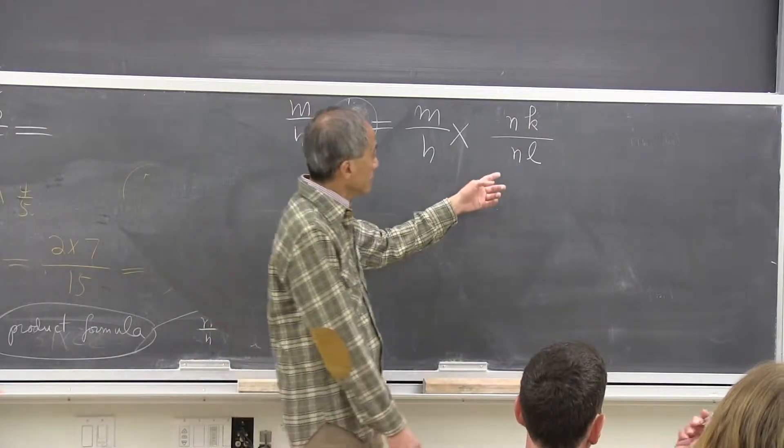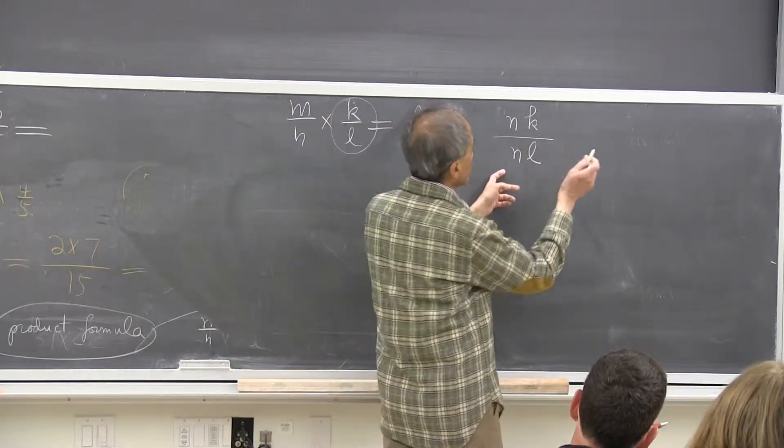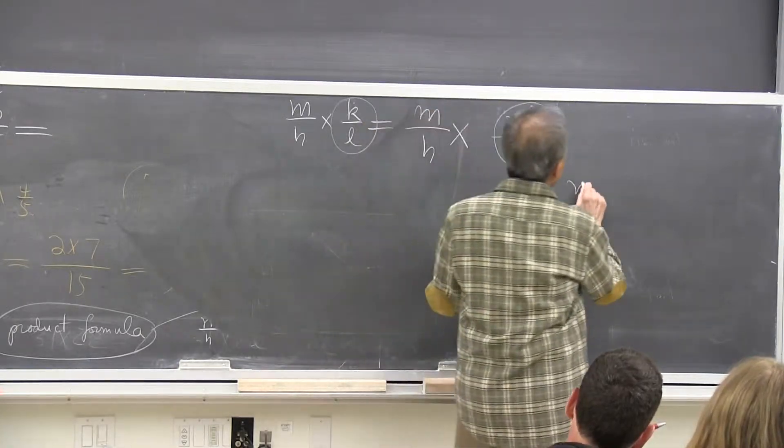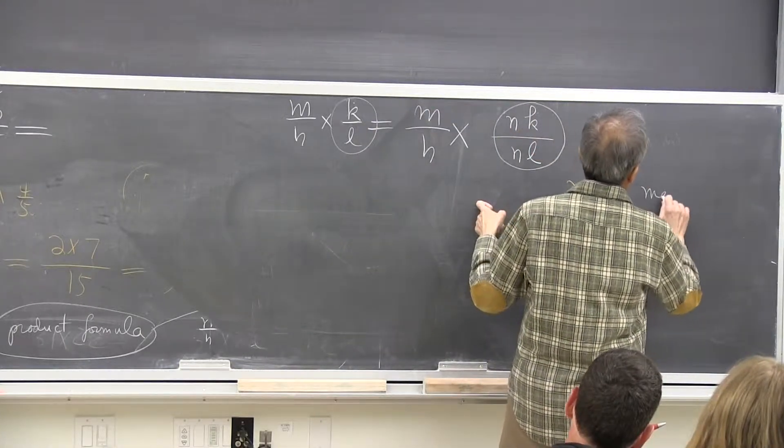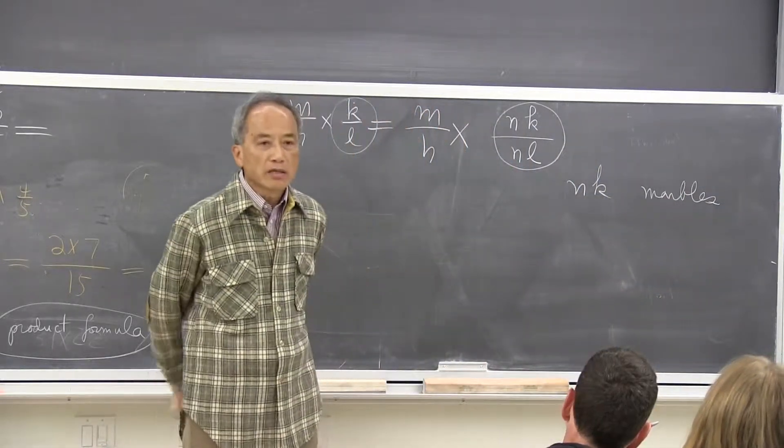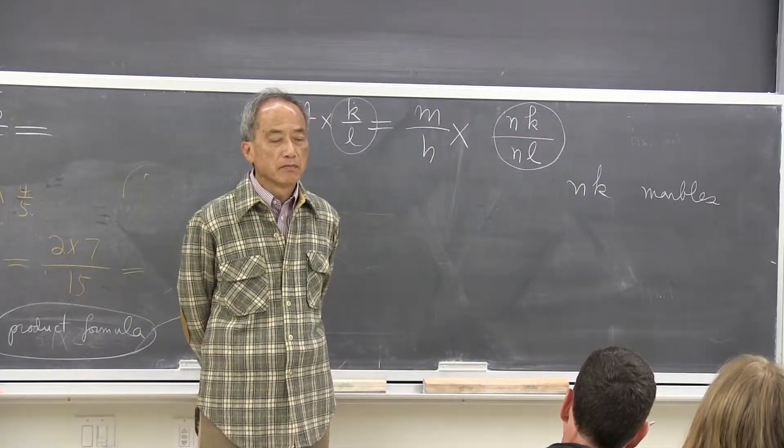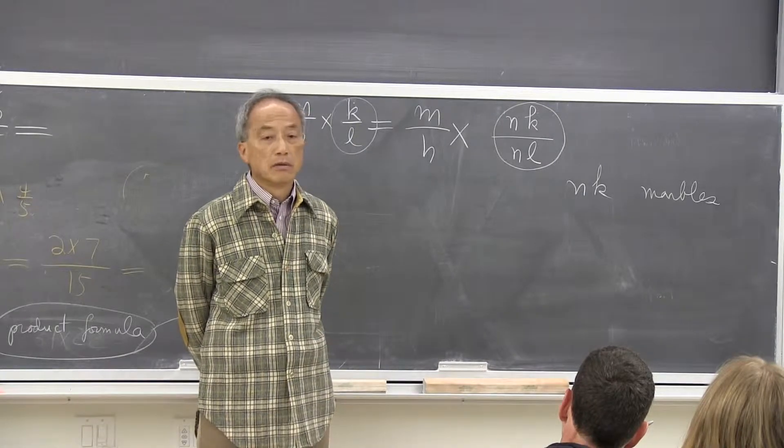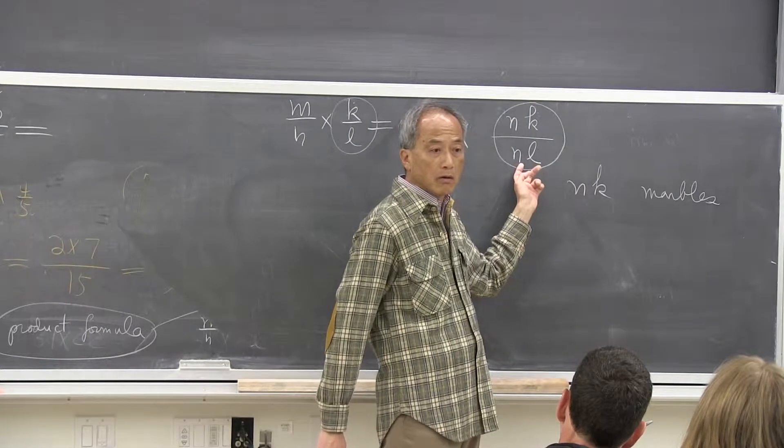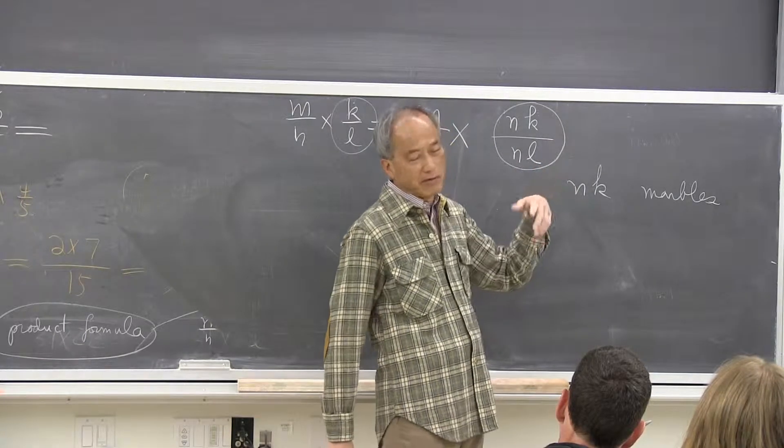Now I have NK marbles. I want to divide it into N equal parts. How big is my part? K over L. K marbles. So my marbles, of course, now is 1 over NL. Different marbles.